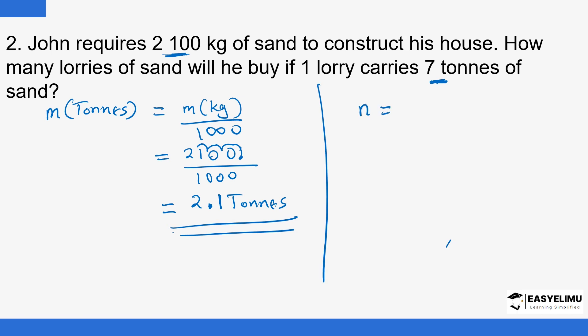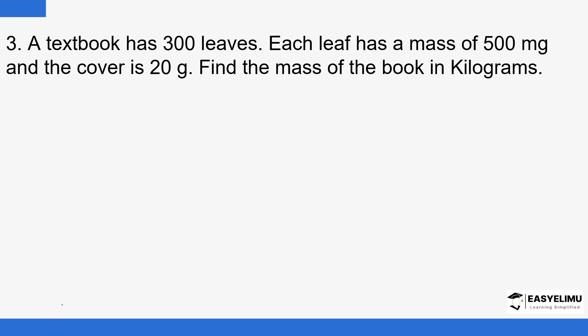The number of lorries should be equal to the number of tons divided by 7. That is 2.1 divided by 7. This is 0.3. The number of lorries now in this case will be 3 over 10 of a lorry.